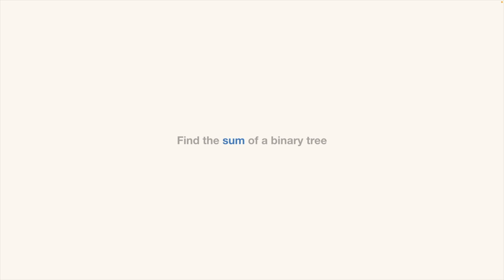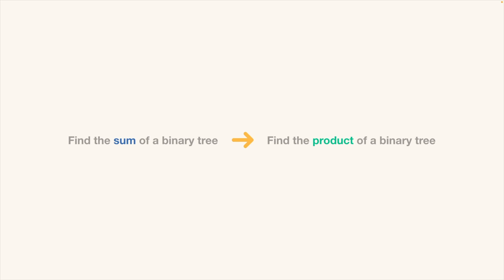If the original problem is to find the total sum of values in a tree, then the boring variation would be to find the total product of the tree. This variation is nearly identical to the original — we just change the math operation from addition to multiplication. That's why we call it a boring variation; it's very similar to the original. These types of variations are valuable because they give you another opportunity to apply a concept in a slightly different context. If you struggled on the original problem and used extra resources for help, you should expect to do much better on the variation. This is how you build confidence in your understanding.